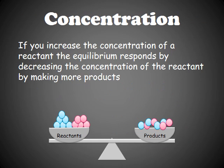One of the things you can change is the concentration of either the products or the reactants. If you increase the concentration of a reactant, the reaction will respond by decreasing the concentration of the reactant and start making more products. Correspondingly, if you're putting products into a reaction, it's going to push to create more reactants.